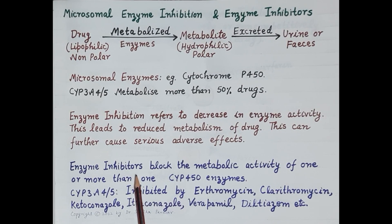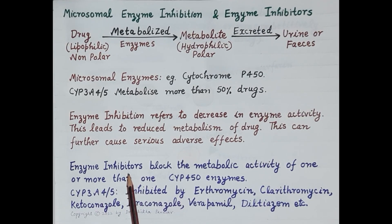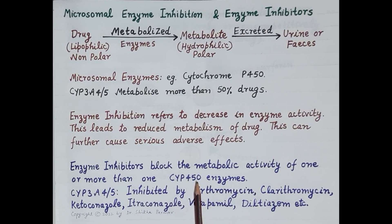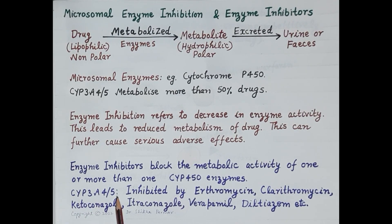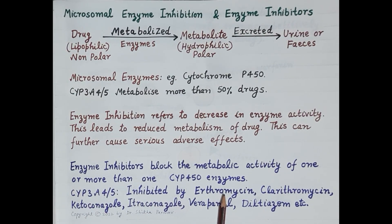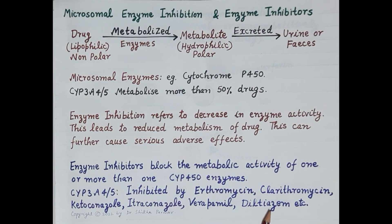Enzyme inhibitors are drugs or chemicals that block the metabolic activity of one or more cytochrome P450 enzymes, causing enzyme inhibition. Cytochrome P450 3A4 and cytochrome P450 3A5 metabolize more than 50 percent of drugs, and these two enzymes are inhibited by drugs like erythromycin, clarithromycin, ketoconazole, itraconazole, verapamil, diltiazem, etc.